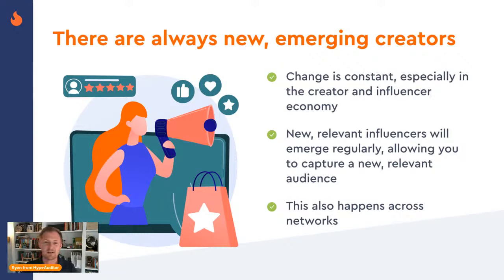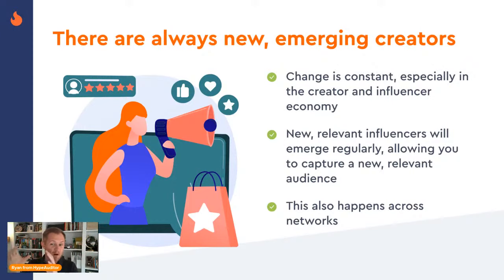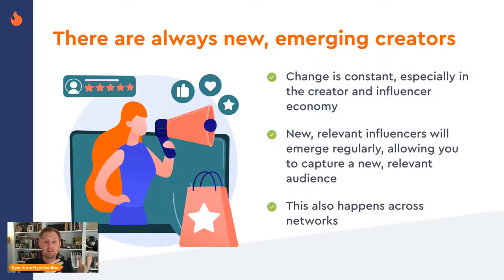Another reason is that creators are always appearing and new networks are always appearing. This change is extremely constant right now and it's going to be for the foreseeable future. If your approach to influencer marketing is 'I've got my six or seven folks, they're great, we've been working with them for a few years,' you'd probably find three or four times that many that are even more relevant with even higher engagement. People have to keep up with constant change, including influencers expanding into podcasts or writing blogs — longer-form, more traditional ways of capturing an audience.